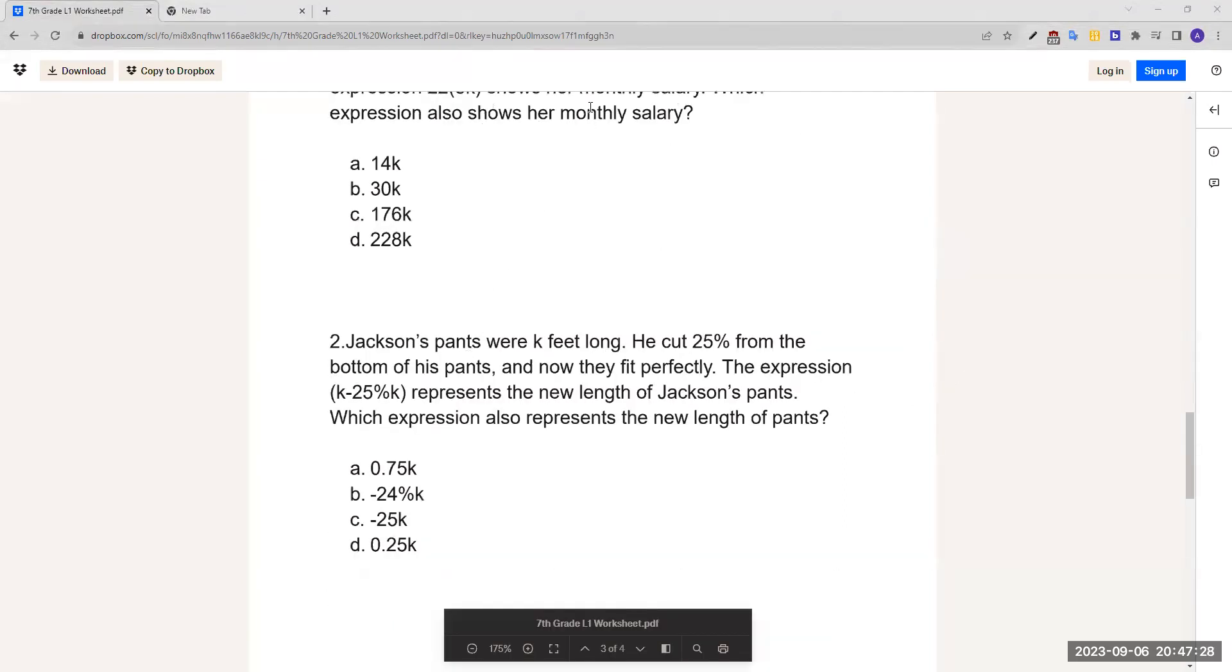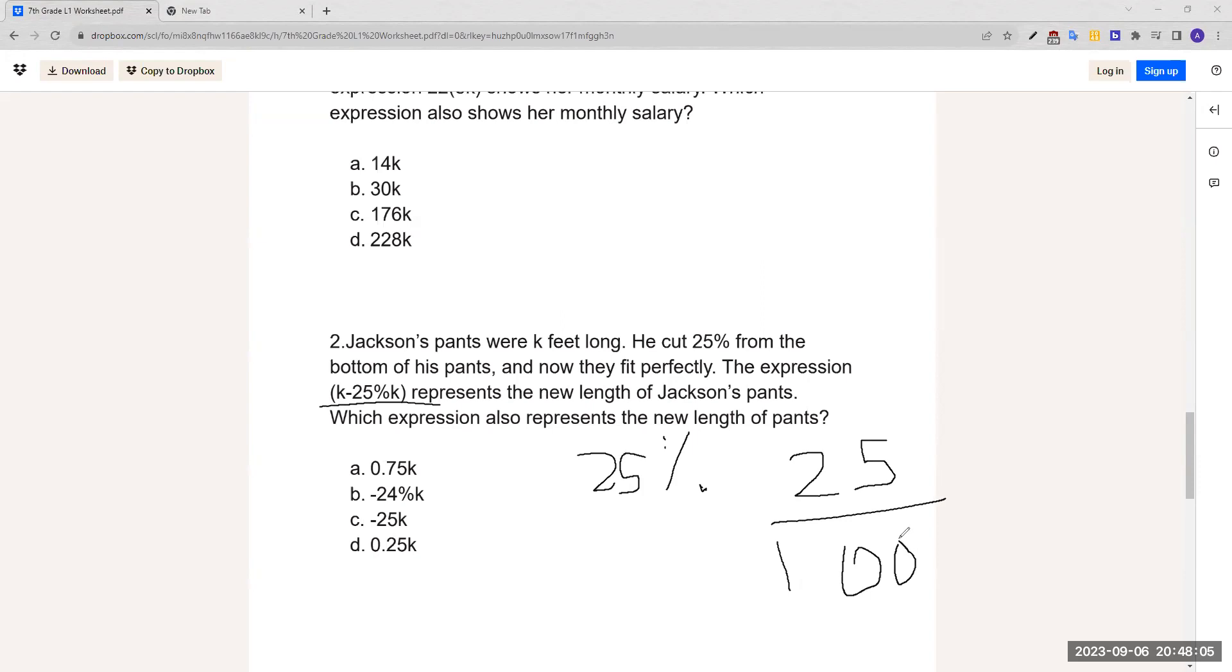Jackson's pants were k feet long. He cut 25% from the bottom of his pants, and now they fit perfectly. The expression k minus 25% k represents the new length of Jackson's pants. Which expression also represents the new length of pants? Using this expression, k minus 25% k, we can substitute. It says 25%, right? And 25% is the same thing as 25 over 100, and 25 over 100 is just 0.25.